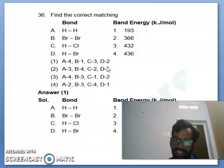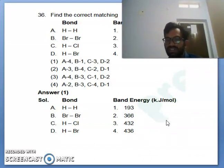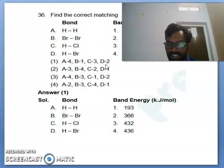You can see the fourth one and the correct matching. You can see hydrogen bond and HBr, hydrogen and chloride, hydrogen and bromide. What is the bond energy? You can see here clearly the first one is the answer. Hydrogen and HBr indicate the matching is the first one answer. A is 4, B is 1 and C is 3 and D is 2.